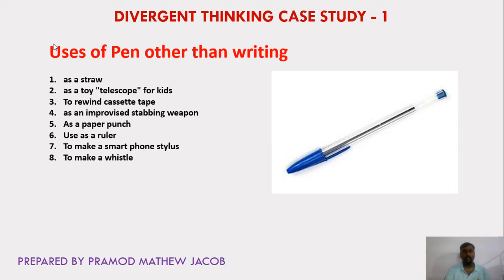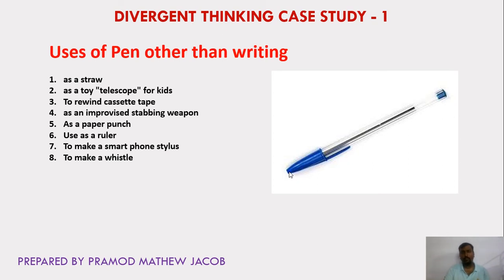A pen can also be used as a roller or scale to draw a straight line, as a smartphone stylus, or as a whistle if there is a hole in the end of the cap. There are many other uses of a pen — if you Google it, you can find 100 different uses other than writing.